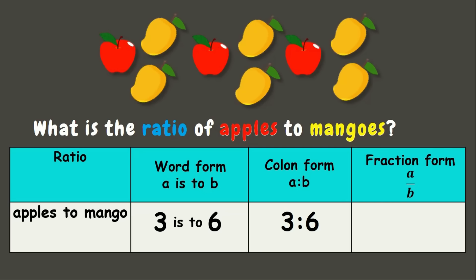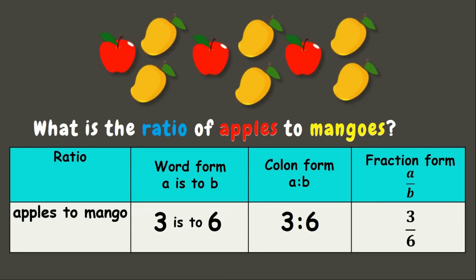In fraction form, the first quantity serves as the numerator while the second quantity serves as the denominator, which makes three over six. This means that for every three apples we have six mangoes. Remember, ratio is a comparison of two or more quantities, but we can only use the fraction form when comparing two quantities.